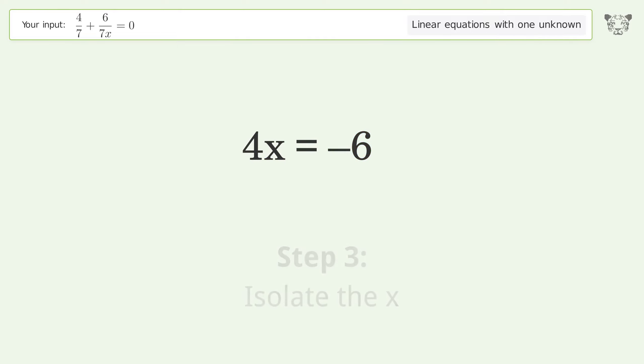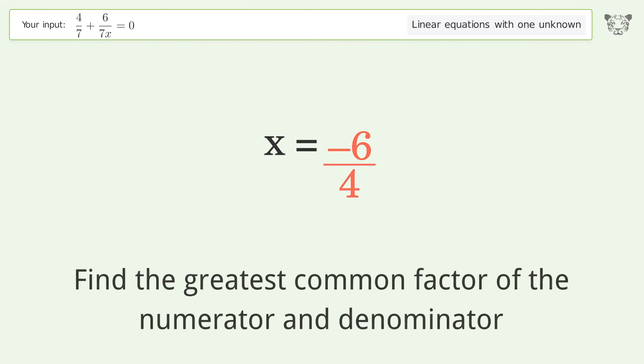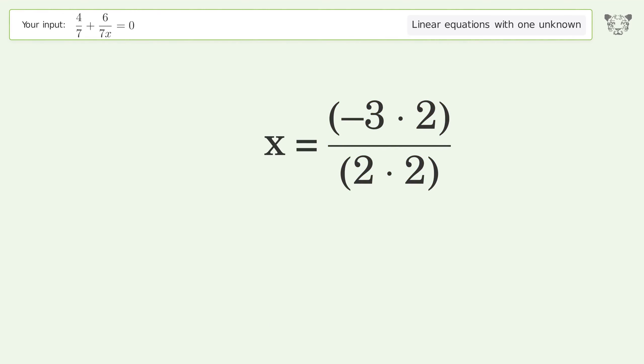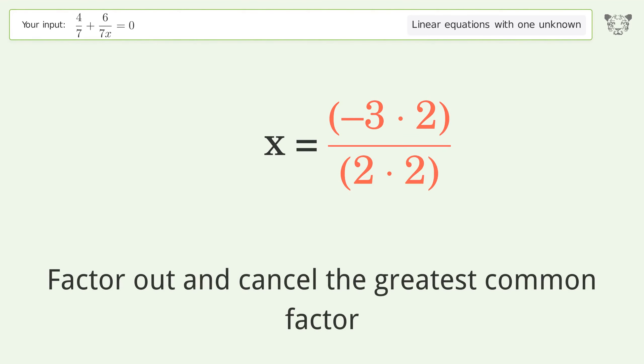Isolate the x. Divide both sides by 4. Simplify the fraction. Find the greatest common factor of the numerator and denominator. Factor out and cancel the greatest common factor.